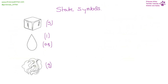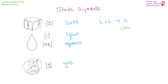State symbols tell us what state something is in. S is solid, L is liquid, AQ is aqueous, and G is gas. If you see state symbols in an equation, the answer generally refers to them. If you see liquid and liquid or aqueous and aqueous going to a solid, it is going to turn cloudy. If you have a liquid and a solid or a liquid and a liquid producing a gas, you will see bubbles, fizzing, or a loss of mass.